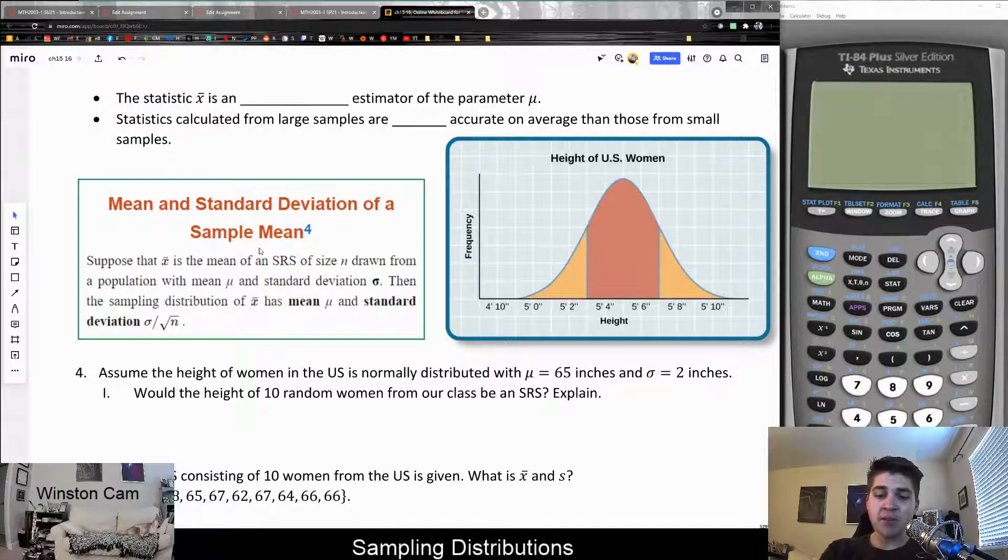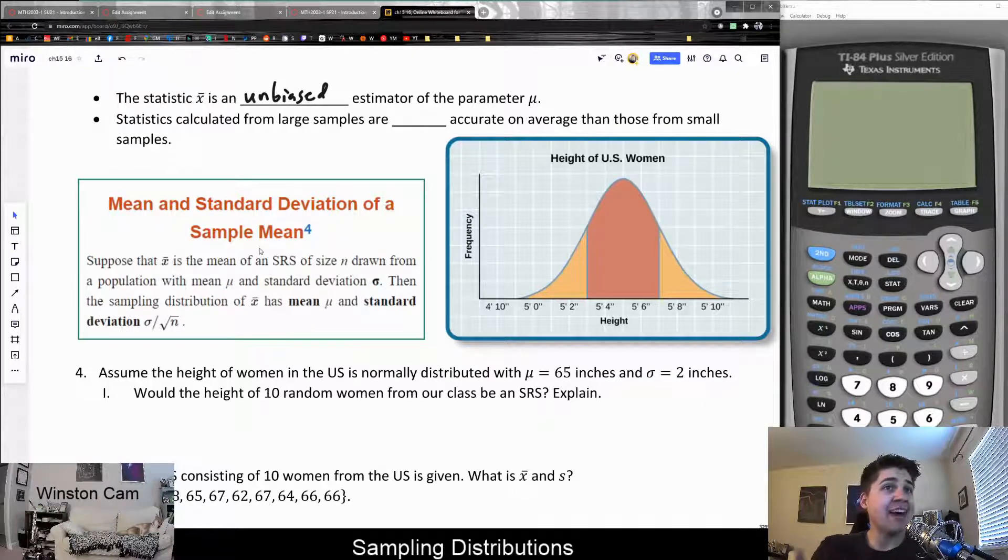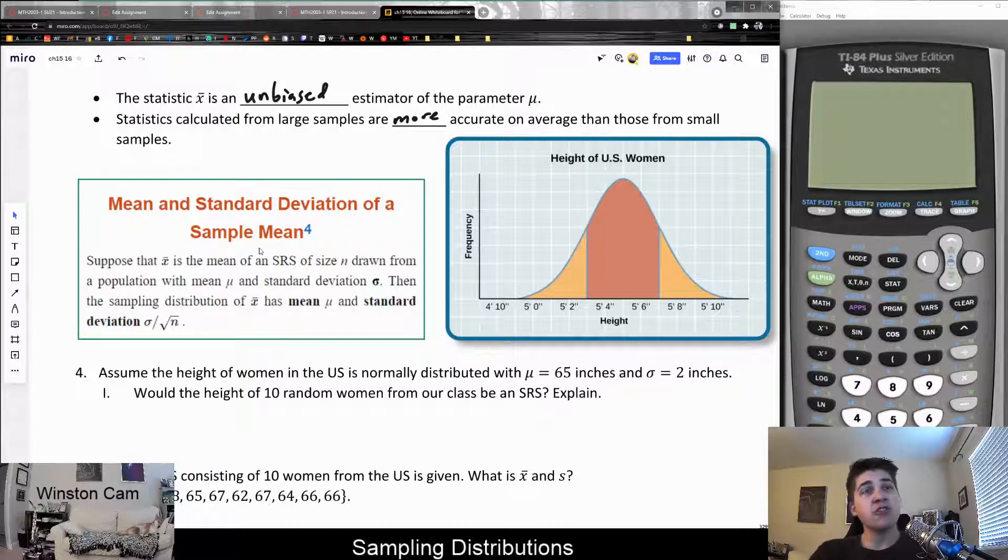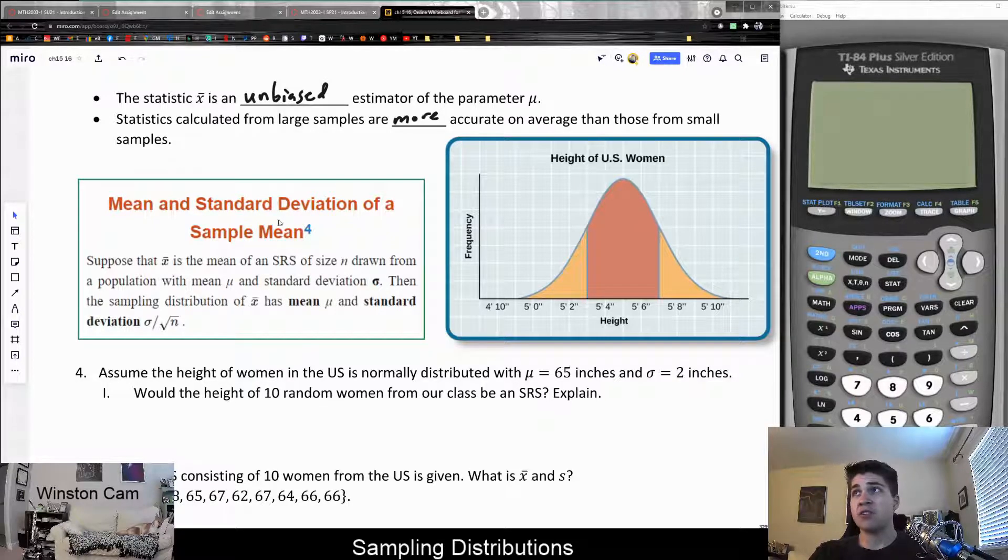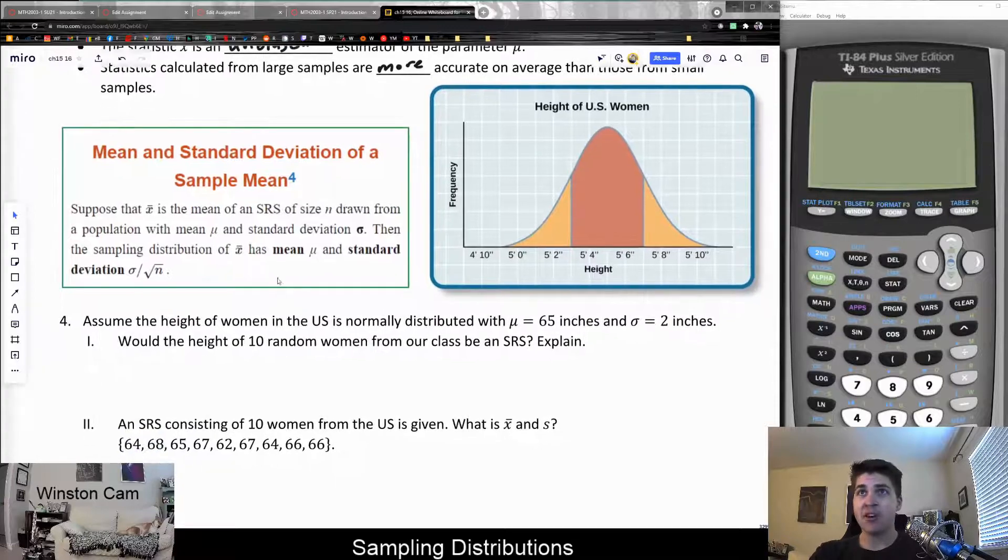Remember, X bar is sometimes called an unbiased estimator of the actual parameter mu. Because, assuming it comes from a simple random sample, that data is random. It might be too high, it might be too low, but it doesn't have bias. The only bias is random chance. Another conclusion is that larger samples are more accurate on average than small samples. Not guaranteed to be better, but on average they are better.